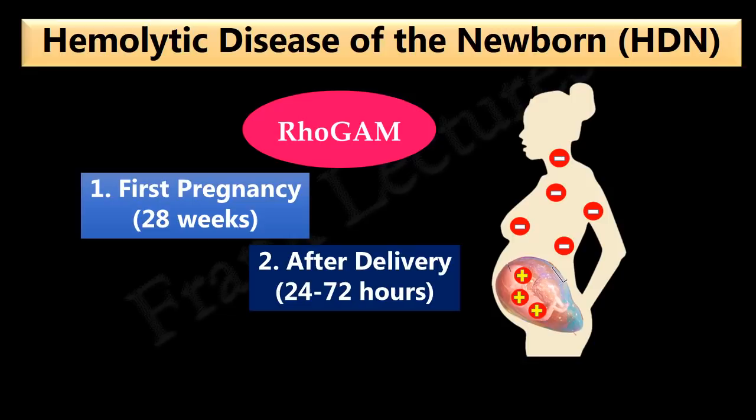In this video lecture we studied that hemolytic disease of the newborn is an RH disease in which fetal red blood cells are destroyed during pregnancy of an RH-negative mother carrying her second or subsequent RH-positive fetus. We also studied that this disease is prevented by passive immunization of the RH-negative mother with anti-RH antibody preparation at 28 weeks gestation, and again within three days after delivery of the child.